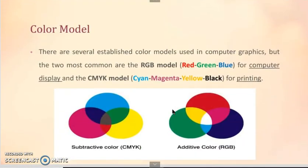There are several established color models using computer graphics. But the two common are the RGB red, green and blue for computer display, and the CMYK cyan, magenta, yellow, black for printing. Here you can see the subtractive color that is cyan, magenta, yellow and black, and here you can see the additive color that is RGB red, green and blue.